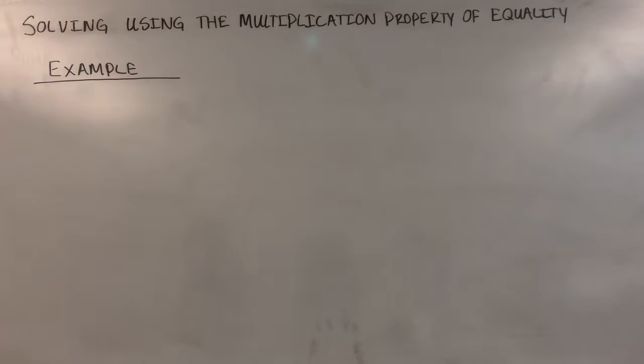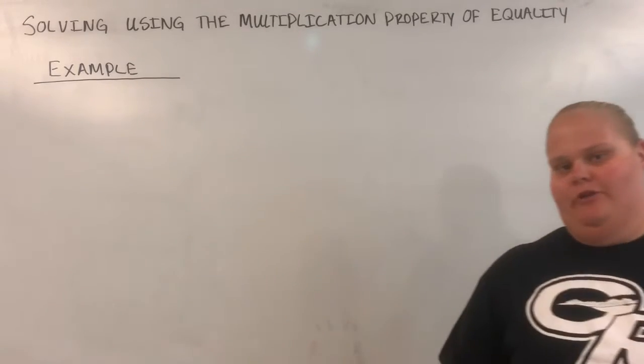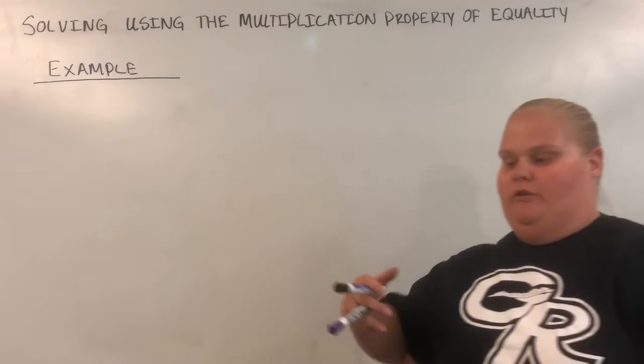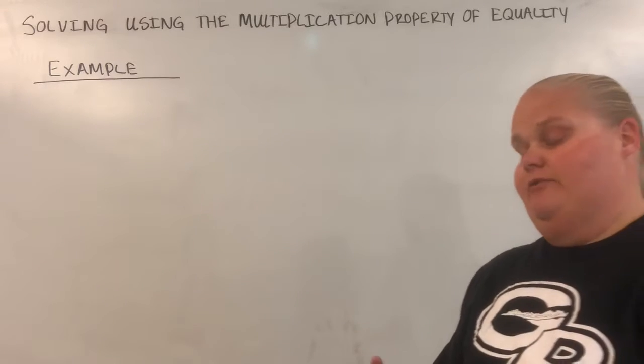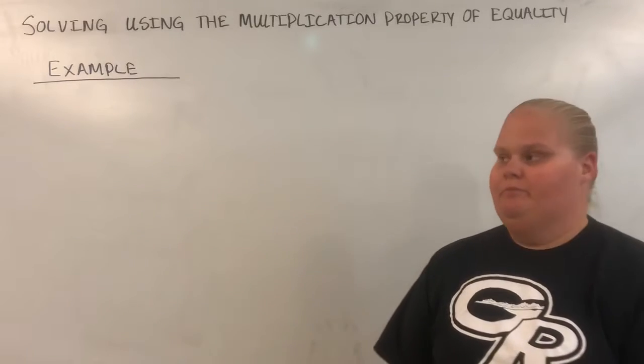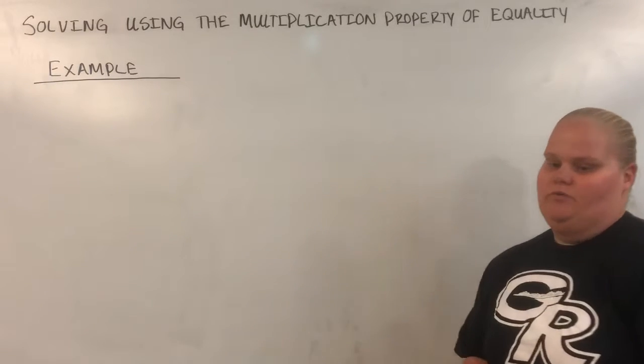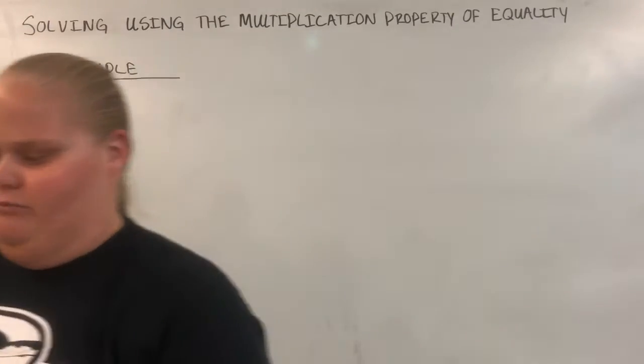Now we're going to talk about solving using the multiplication property of equality. The multiplication property of equality is just like the addition property where it says you have to keep your equation balanced. If you're going to multiply something to one side, you have to multiply it to the other side. And if you're going to divide the equation on one side, you have to also divide it on the other. So we're going to work with solving equations using the multiplication property of equality.